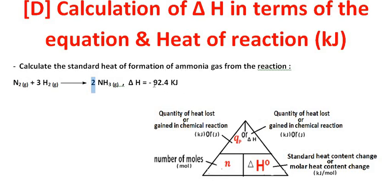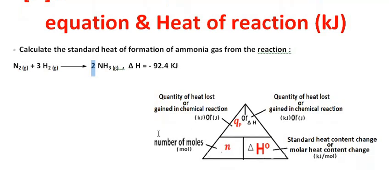So divide delta H by N, which is 2, to get delta H naught. Minus 64 divided by 2 gives minus 46.2 kJ/mol.